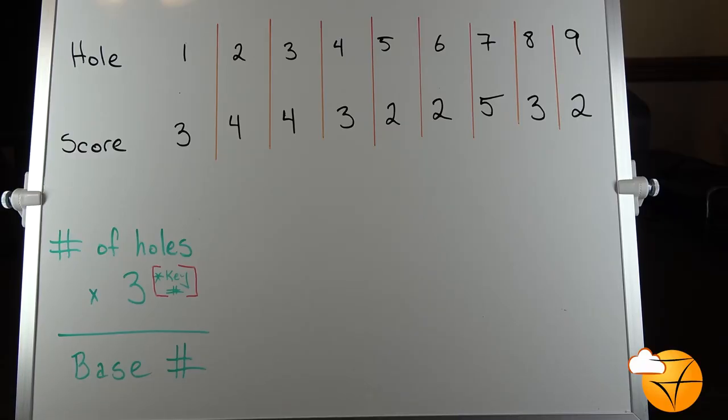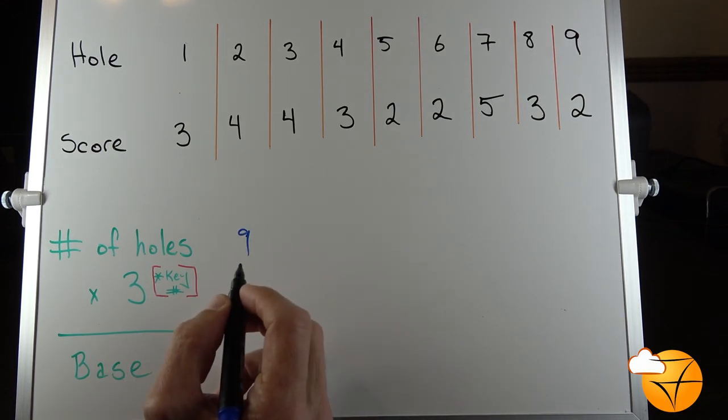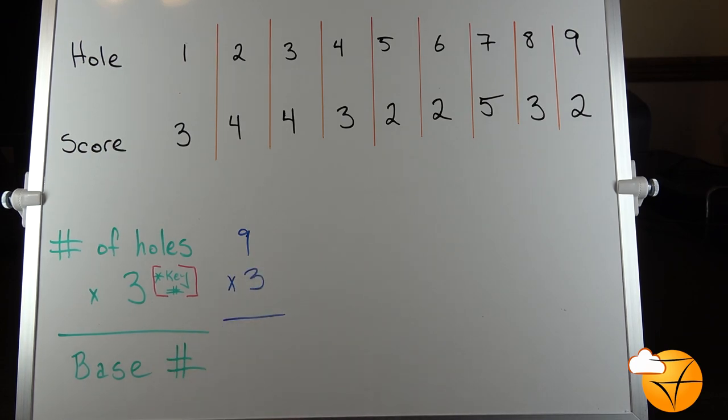All right, so here we have a sample scorecard. As you can see, it has nine holes. It is very important—the first thing you want to do is count how many holes you've played. 99% of the time we're playing 18 holes, but every now and then we will play a 19th or 20th hole. It is imperative that you know how many holes you've played. So we're going to take the number, in this case nine, and multiply it times the key number. The key number is three. That's going to give us our base number of 27.